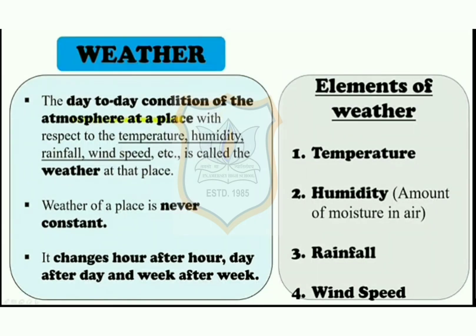Temperature, humidity — that is the amount of moisture in air — rainfall and wind speed are called the elements of the weather.